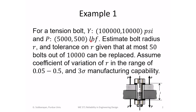We need to estimate the bolt radius r and the tolerance on r, given that at most 50 bolts out of 10,000 can be replaced. This is our reliability requirement. We also assume the coefficient of variation of r is in the range 0.05 to 0.5, and a three-sigma manufacturing capability, which I will explain the importance of.